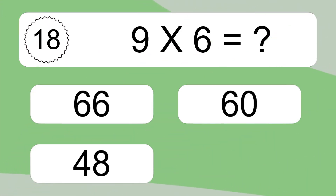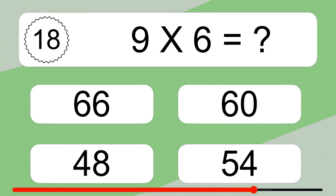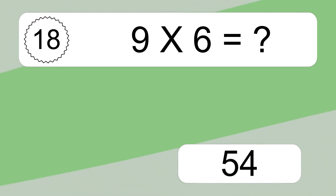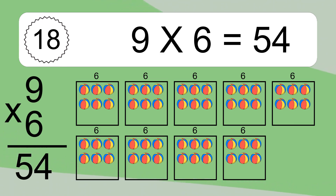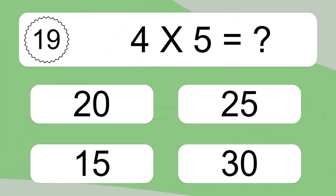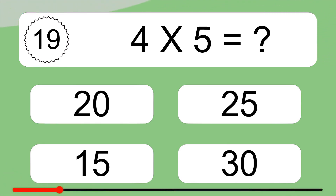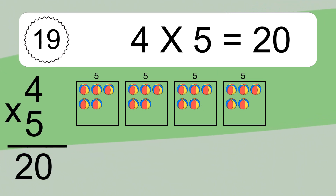9 times 6 equals what? 9 times 6 equals 54. We have 9 boxes, and each box has 6 colorful balls inside. If you count all the balls in all the boxes together, you will have 9 times 6 balls. This equals 54 balls.